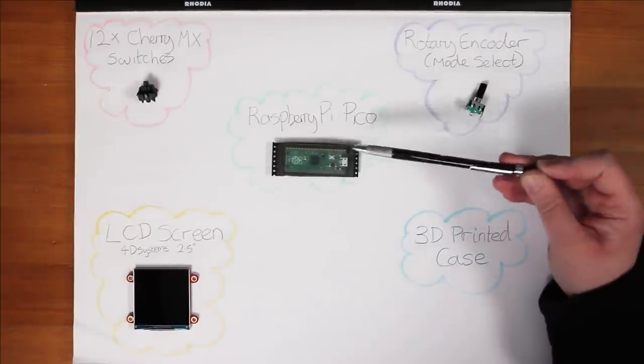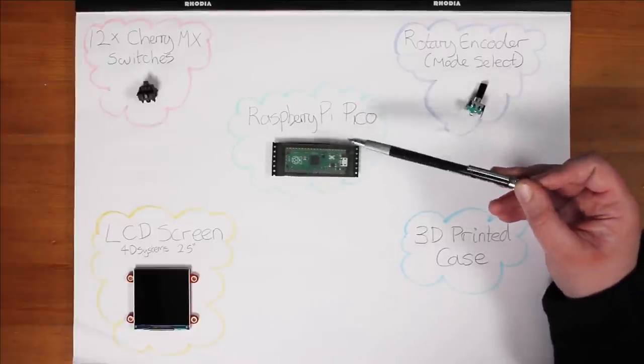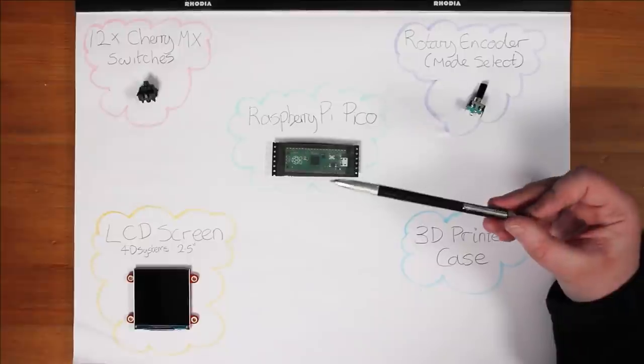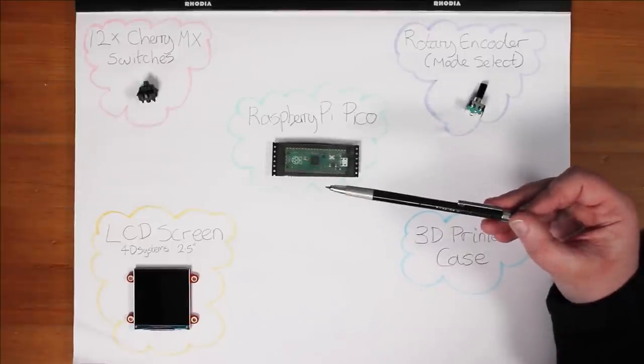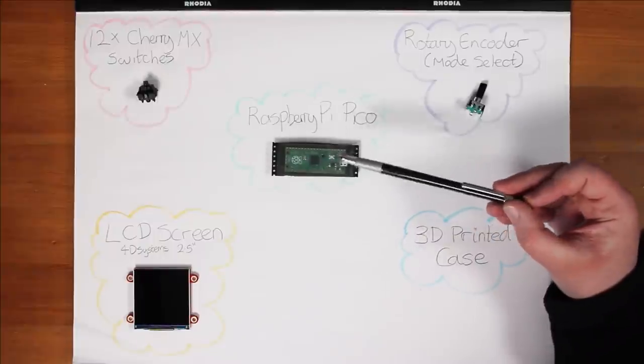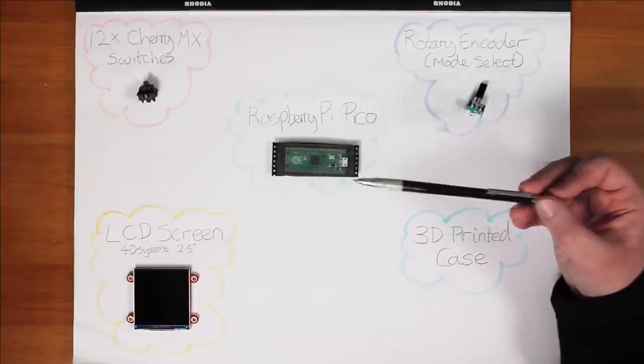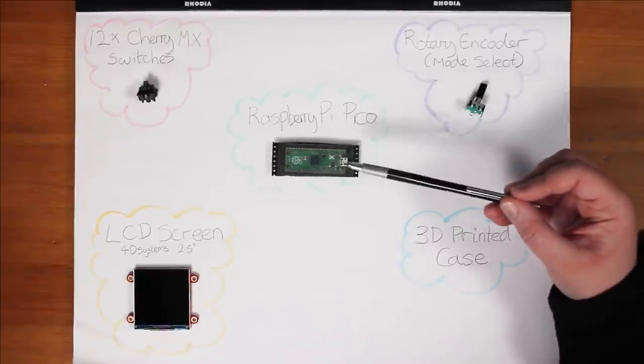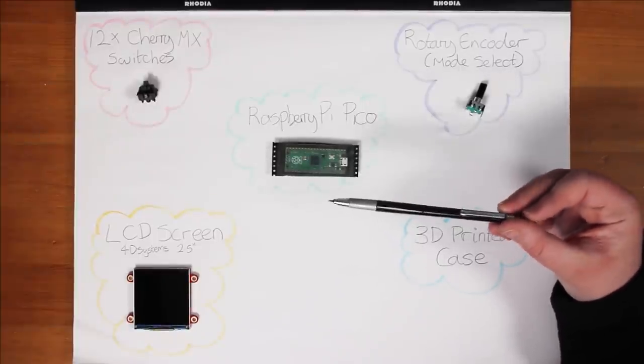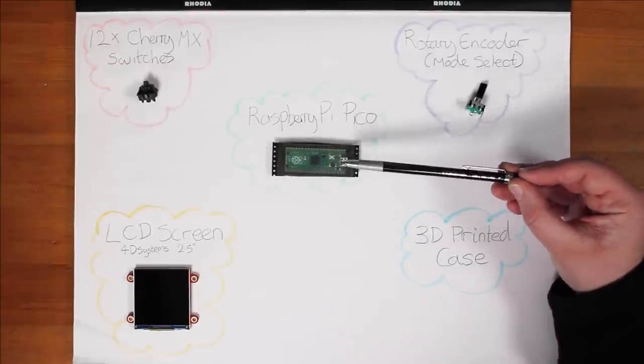So for this project, my microcontroller is going to be the Raspberry Pi Pico. This is because it can be set up to be a USB HID device, which is a human interface device. So that means we can make the Pico appear to a computer as a keyboard. So that will make it really easy for sending across the keyboard shortcut key presses.